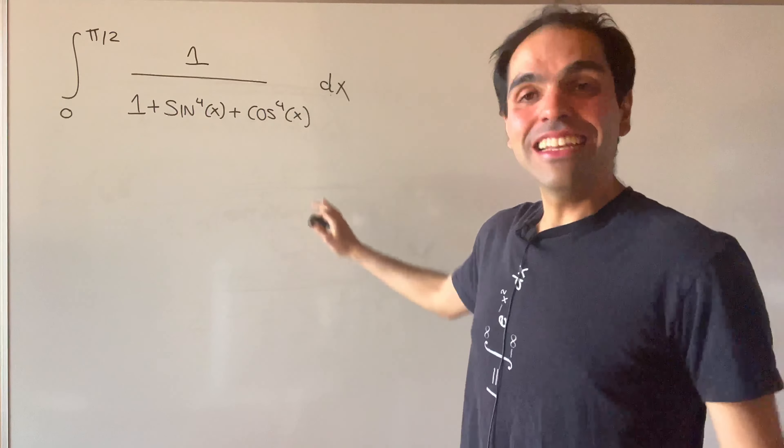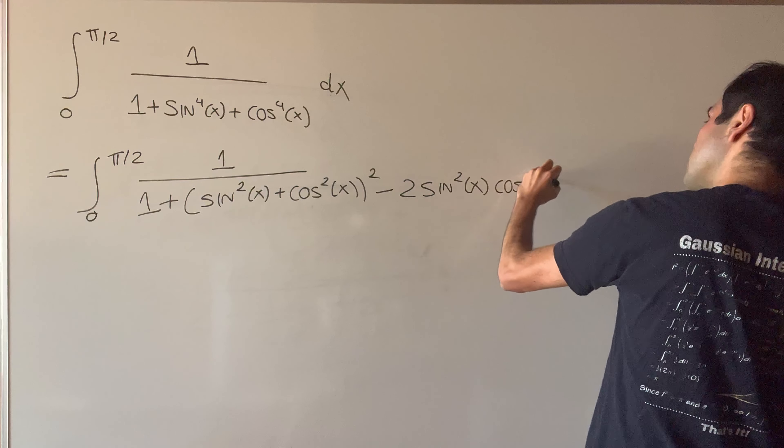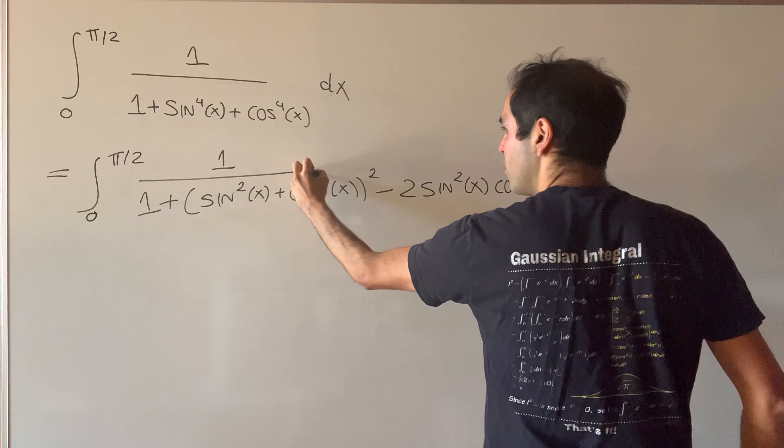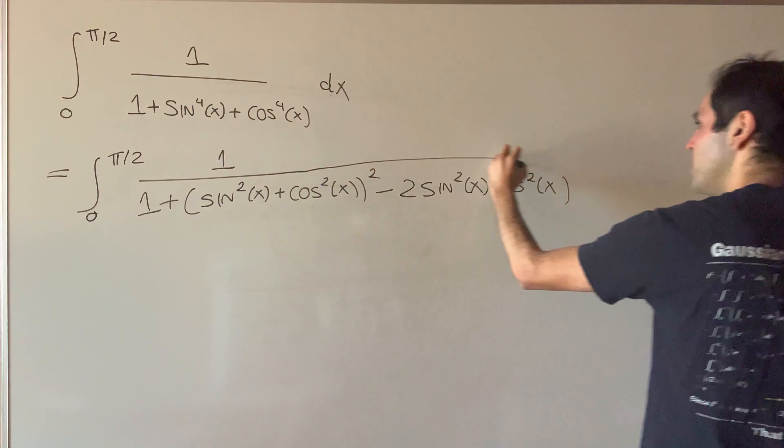The first thing you want to do is complete the square, so this becomes the integral from zero to pi over two of one over — sine squared x plus cosine squared x, all squared, minus the cross terms, so two sine squared x cosine squared x — all in the same denominator, dx.